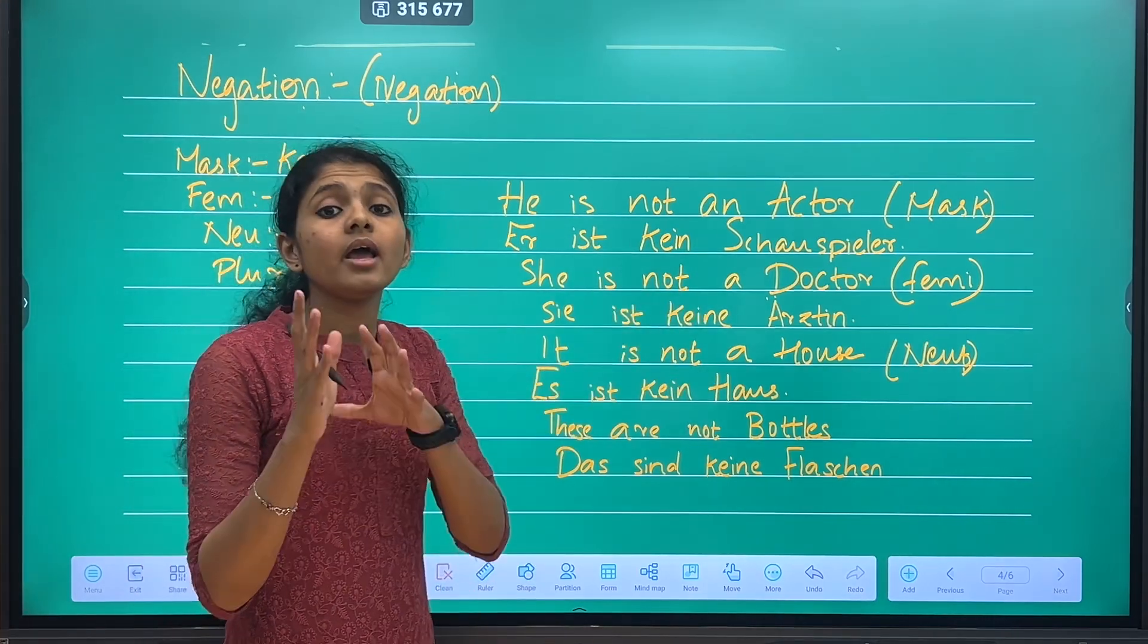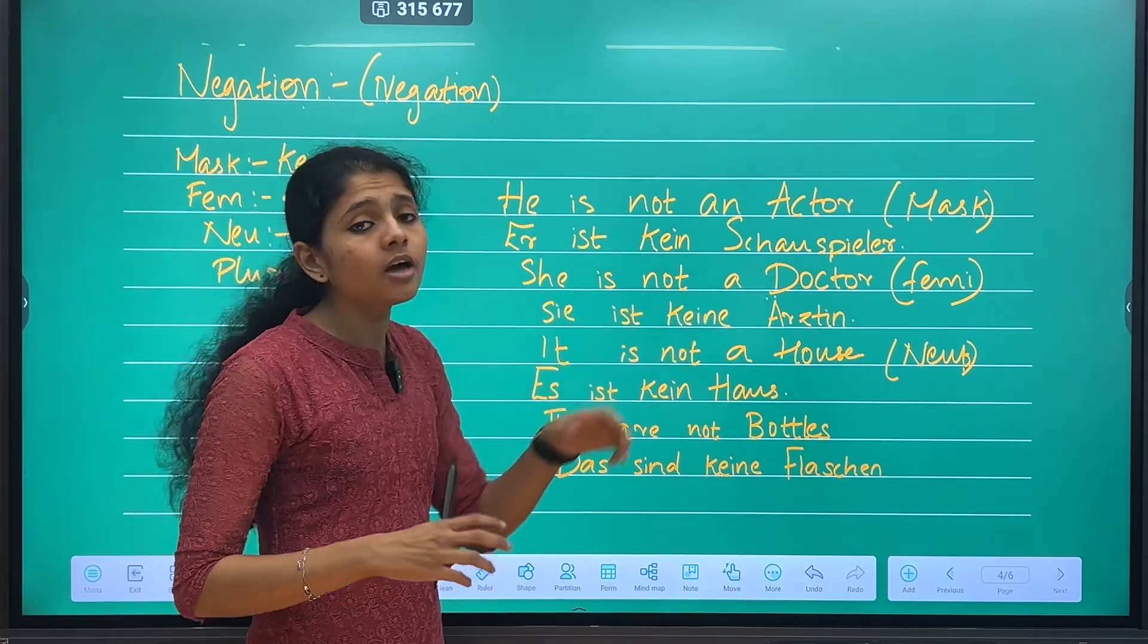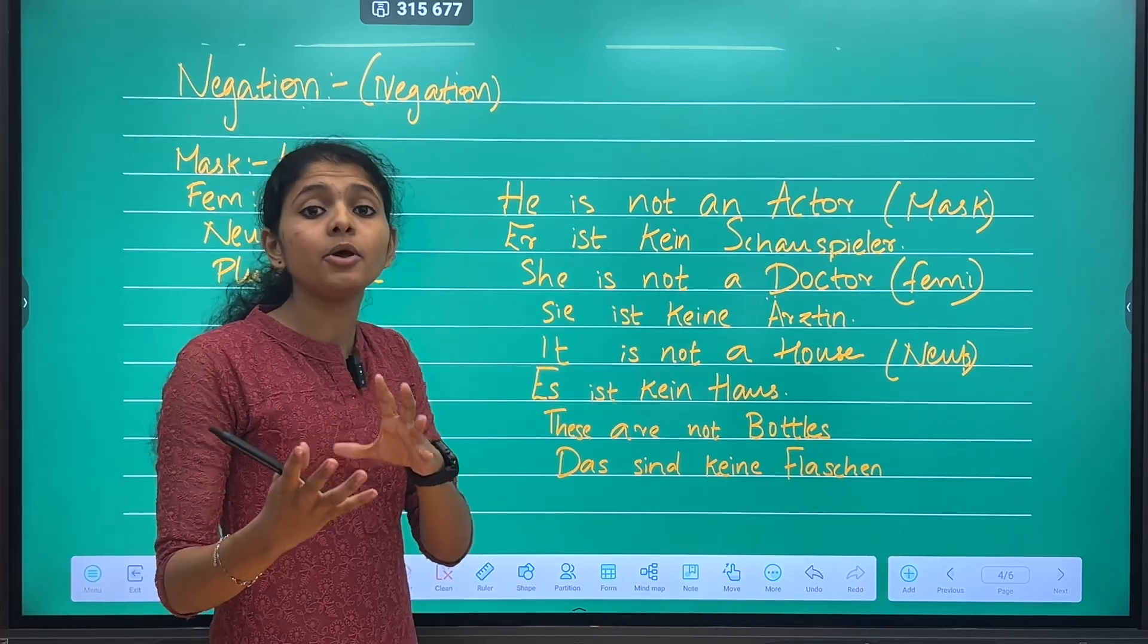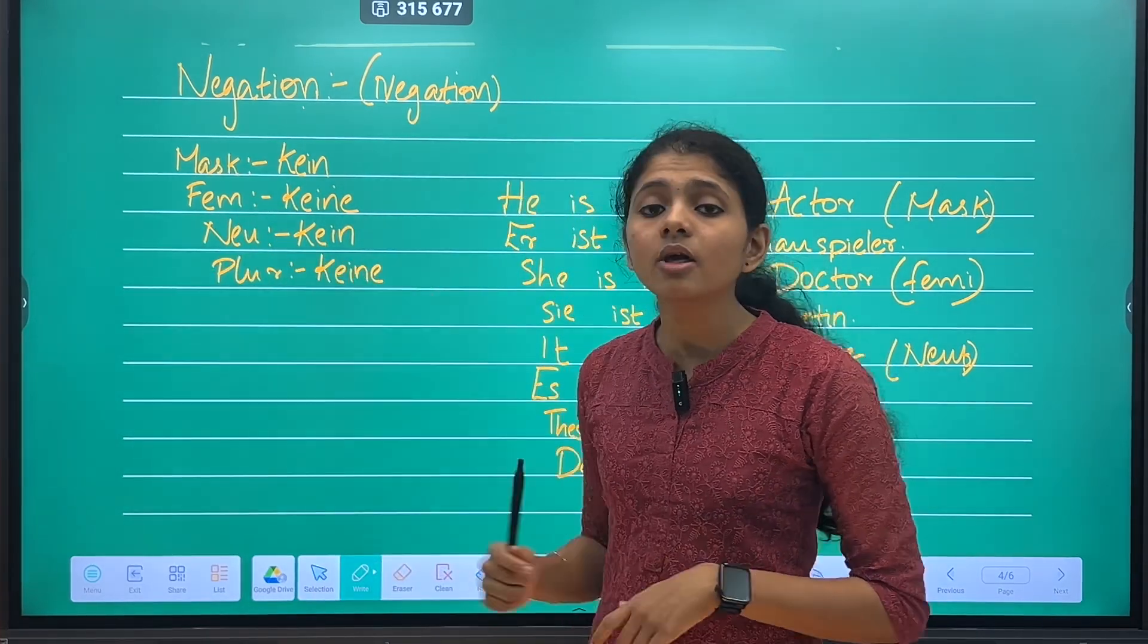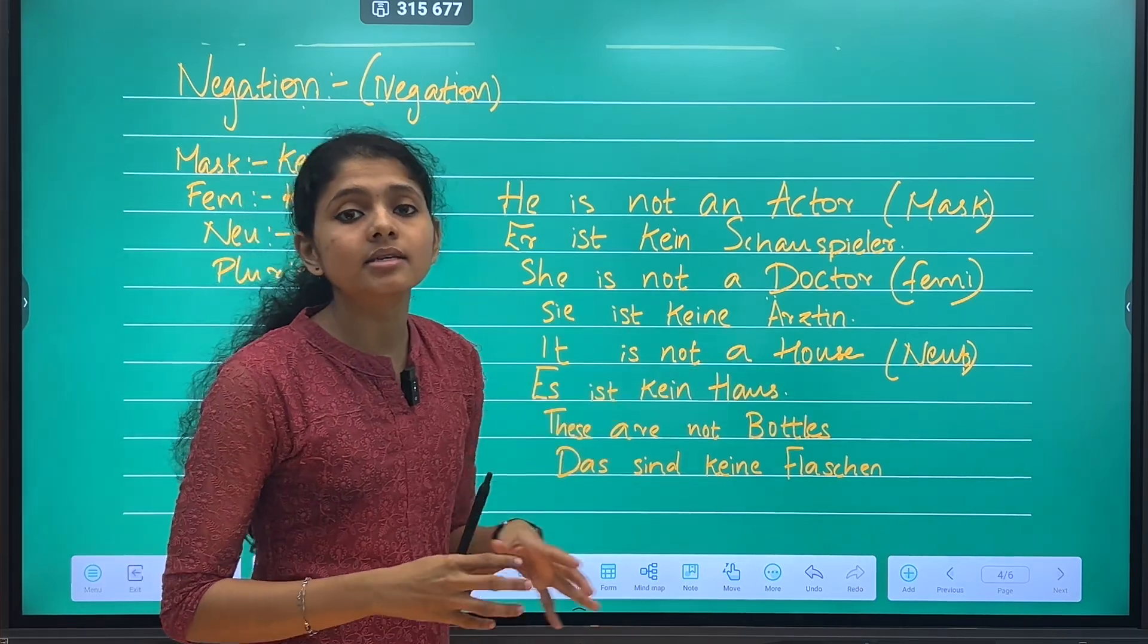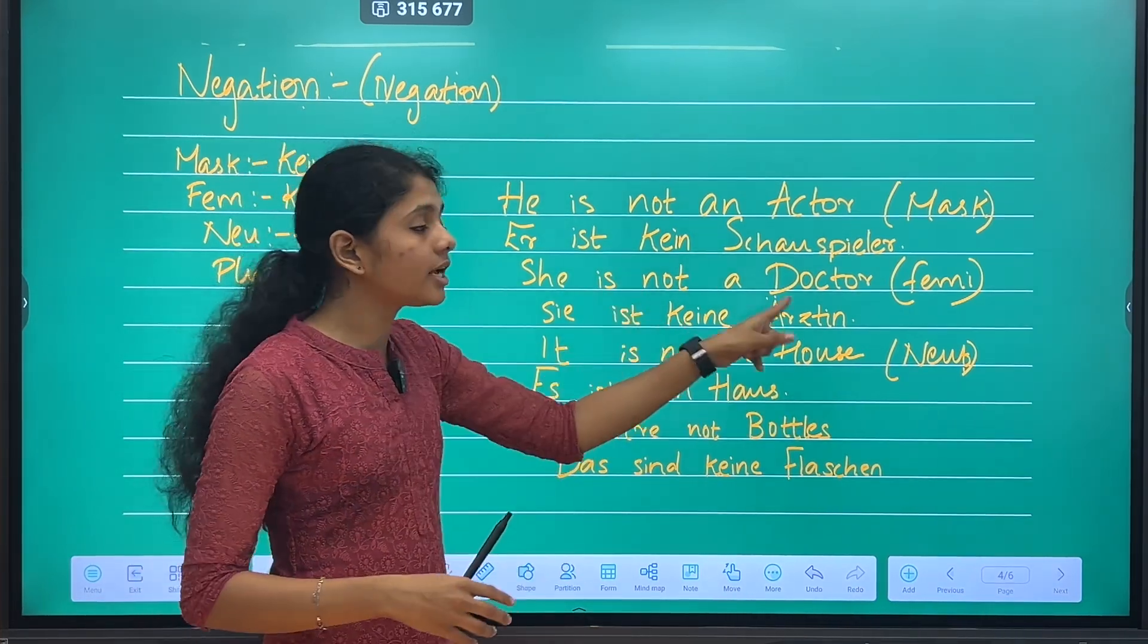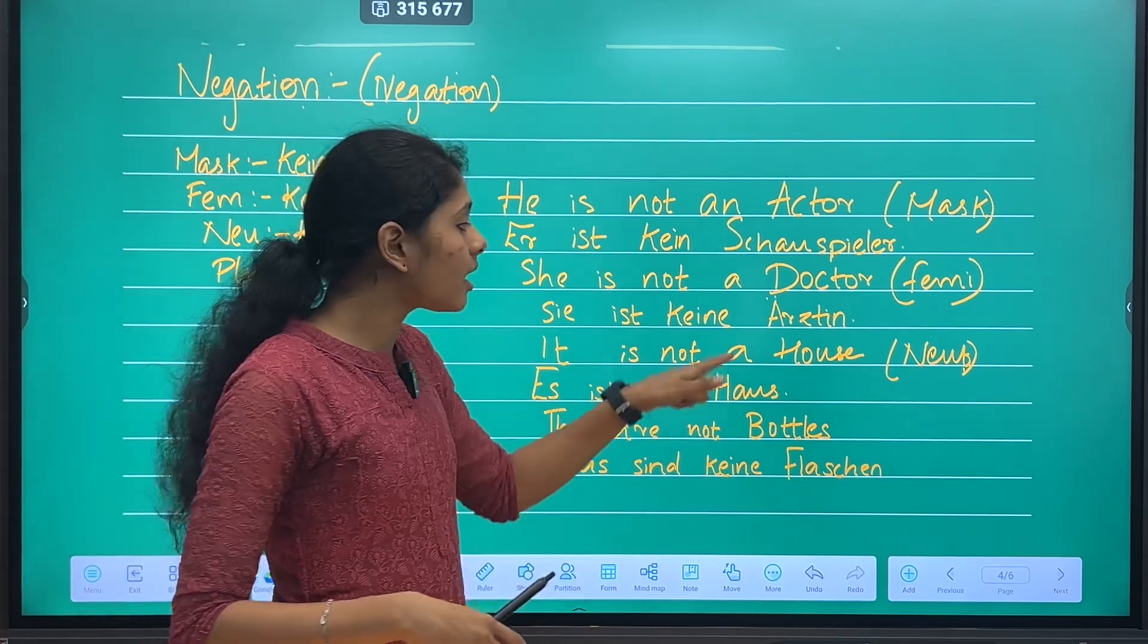Then, she is not a doctor. You use 'keine' as the feminine negation. What will we use for 'die Ärztin'? We use 'keine' now. She is not a doctor, so we use 'keine Ärztin'.